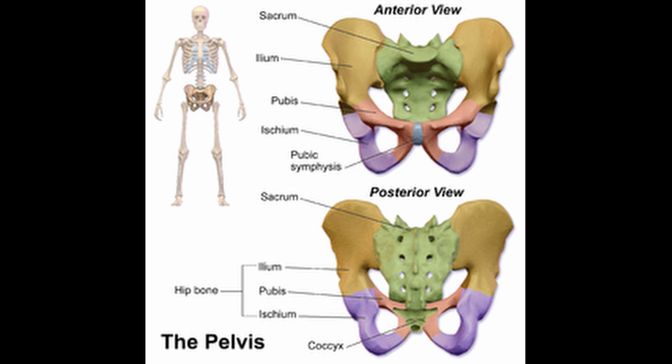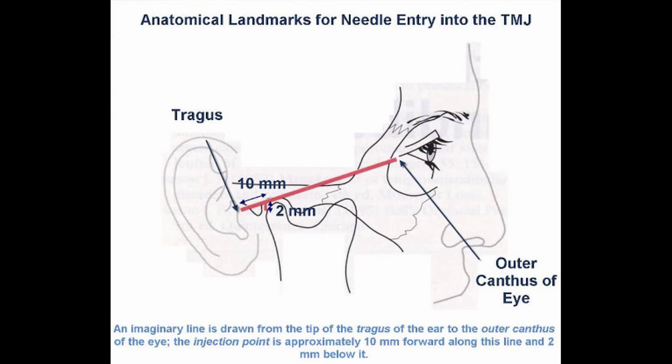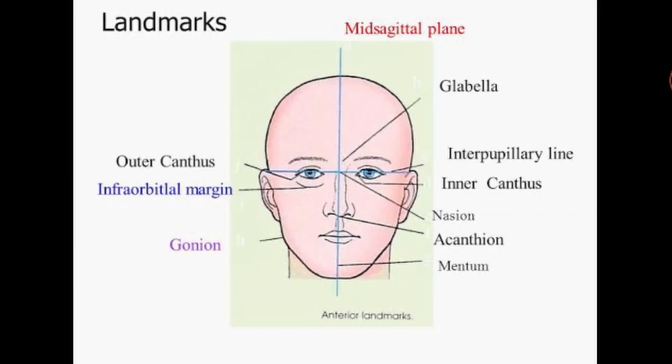Now look at the landmarks of the skull. The first landmark is the outer canthus of the eye, which is where the upper and lower eyelid meet laterally. You can see it here — the outer canthus of the eye.